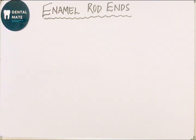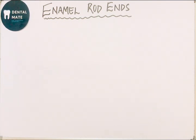Our today's topic is enamel rod ends. These are one of the surface structures of the enamel, which I have already told you while classifying the various structures of enamel in the previous video.